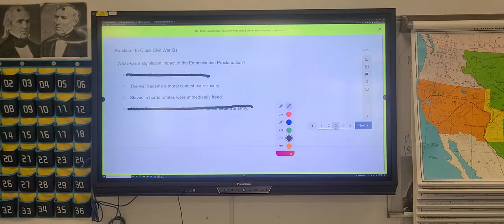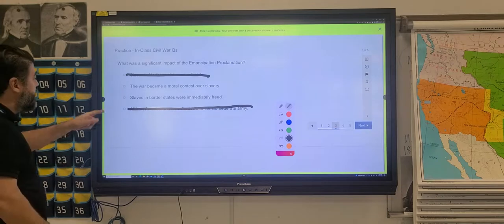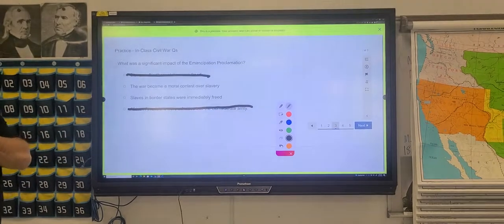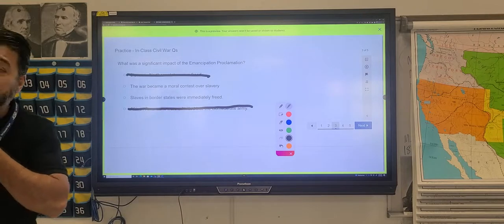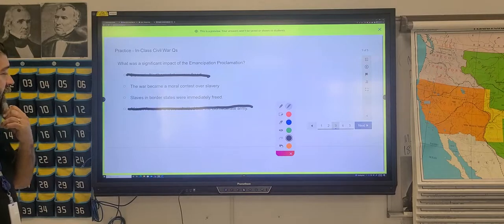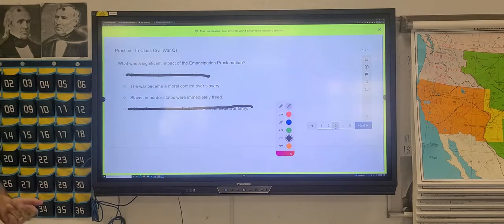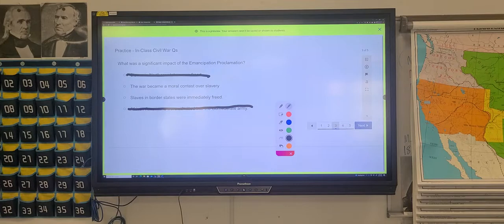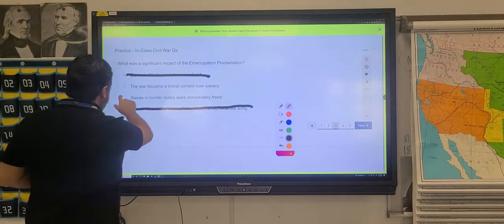So now we are at the infamous 50-50. Any one of those we think right off the bat is wrong or do we have to do some extra work? Okay, you're saying it's B. The war became a moral contest over slavery. Do you think that's the wrong answer? Oh, you think it's the right answer? C is the wrong one. They were not immediately freed in the border states. If you know about the Civil War, that would actually have to wait towards what? What was the amendment to free the slaves? 14th? 13th. Look what happened.